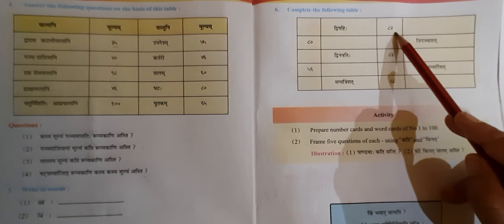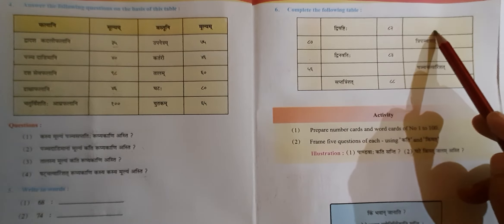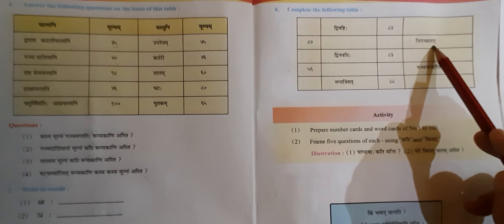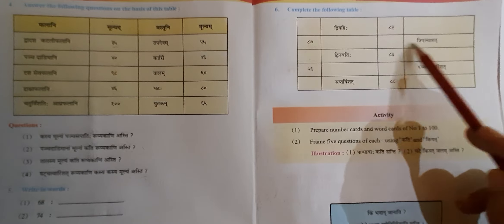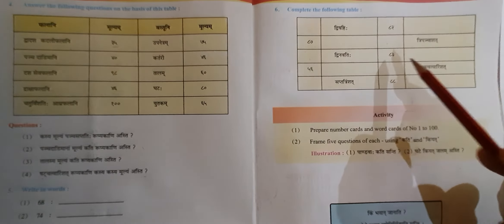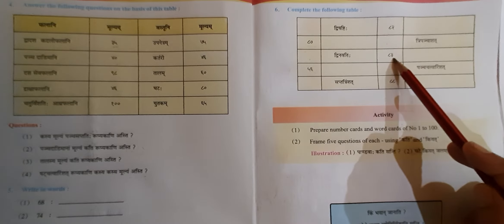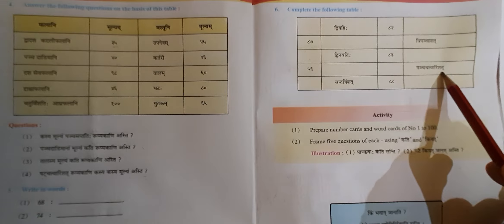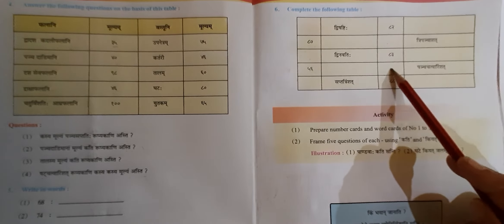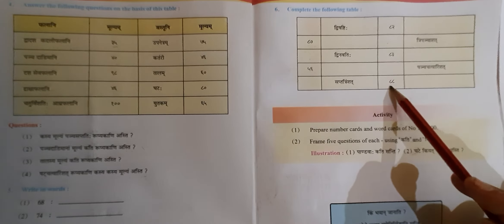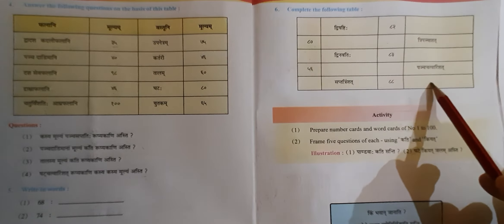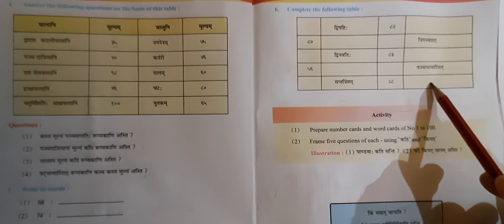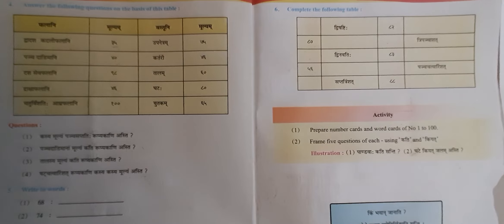82 — Dwaya shi tihi. 3 pancha shat means 53. 83 — Treya shi tihi. Pancha chattwa rinshat means 45. 88 — Ashta shi tihi. The table has been completed.